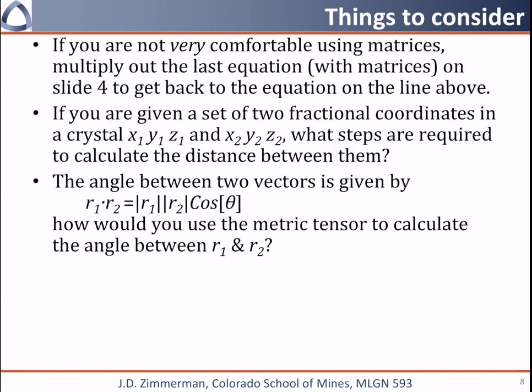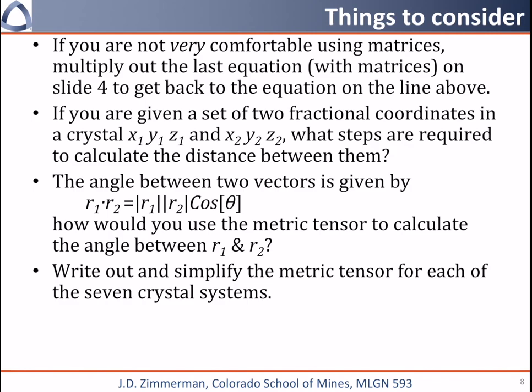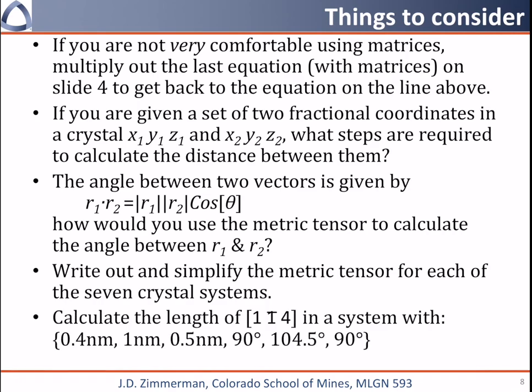Finally, if you need some more practice at this, write out and simplify the metric tensor for each of the seven crystal systems. Finally, try calculating the length of the vector 1, 1 bar, 4 in a system where the unit cell is defined by a equals 0.4 nanometers, b is 1 nanometer, c is half a nanometer, and the angles between the vectors are 90, 104.5, and 90. Thank you very much!